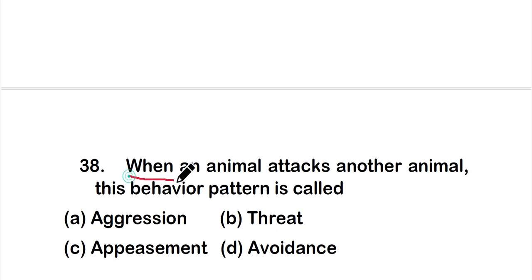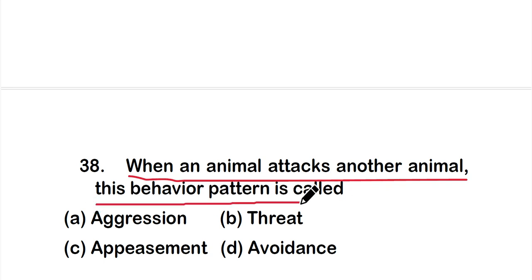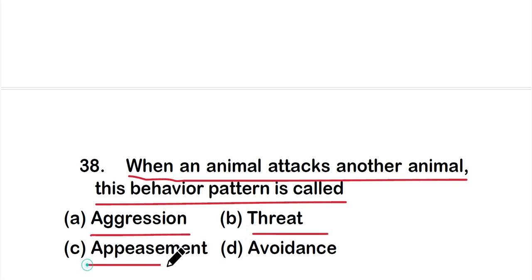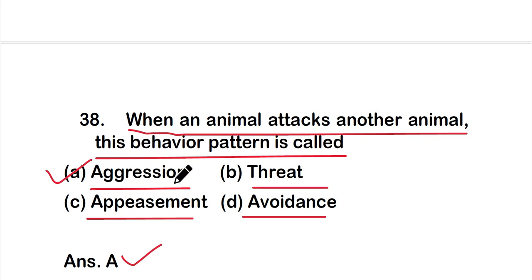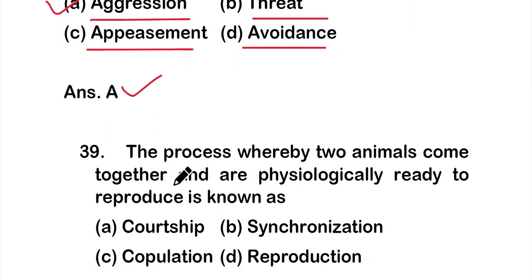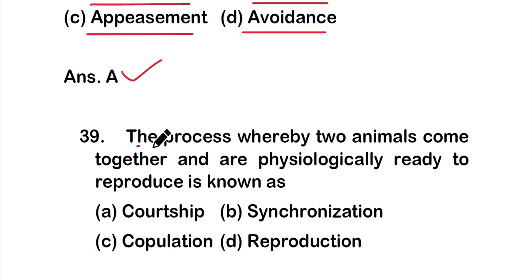Question number 38: When an animal attacks another animal, this behavior pattern is called — option A: aggression, option B: threat, option C: appeasement, or option D: avoidance. The correct answer is option A — aggression. When an animal attacks another animal, the behavior pattern is called aggression.